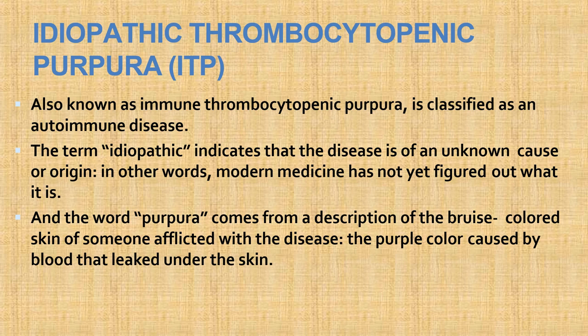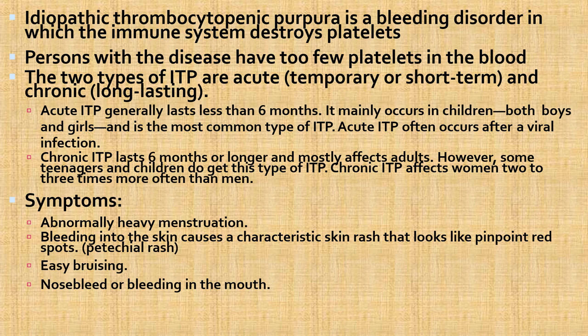ITP — immune thrombocytopenic purpura — is an autoimmune disease. The term 'idiopathic' indicates disease of unknown cause or origin. Purpura describes bruise-colored skin caused by blood leaked under the skin (purple color). It is a bleeding disorder in which the immune system destroys platelets, leaving too few platelets in the blood.